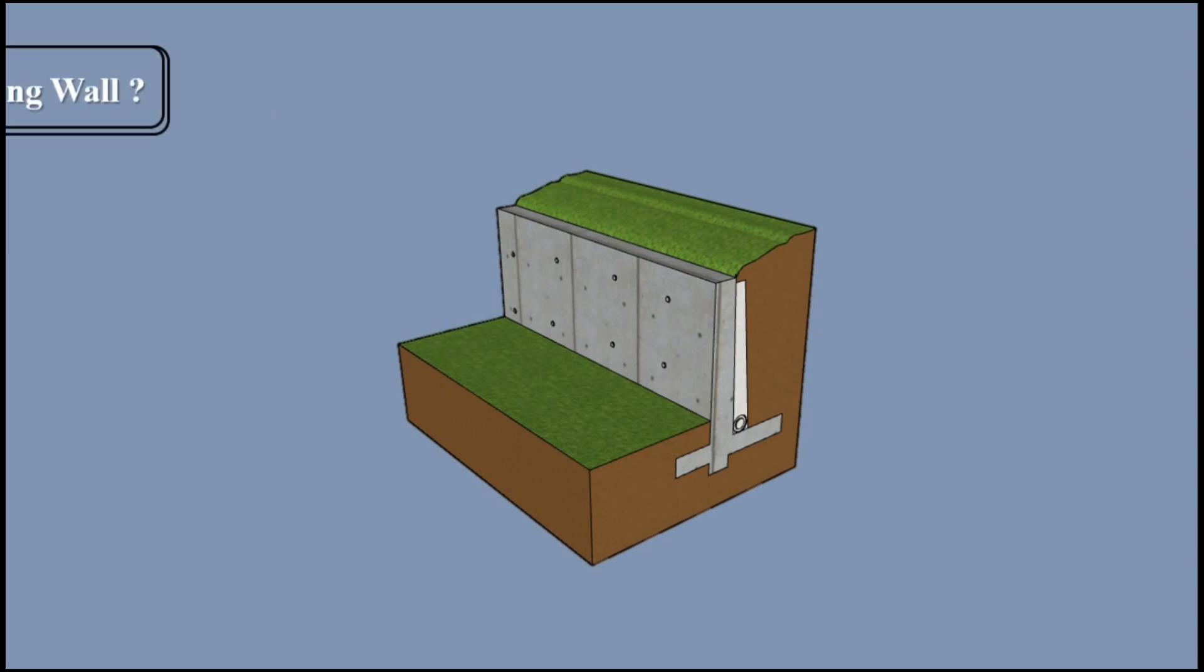What is a retaining wall? Retaining walls are structures used to provide stability for earth or other materials at their natural slopes. In general, they are used to hold back or support soil banks and water, or to maintain difference in the elevation of the ground surface on each side of the wall.